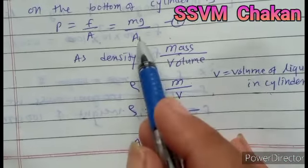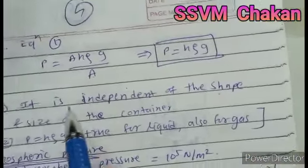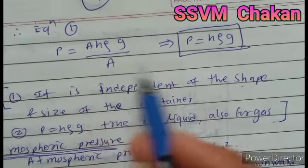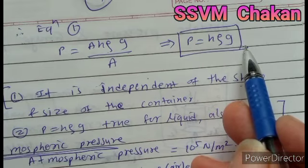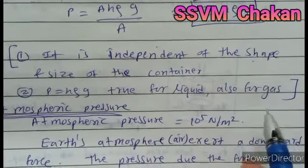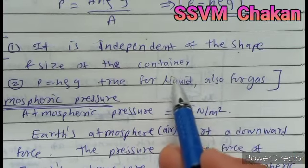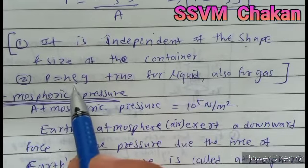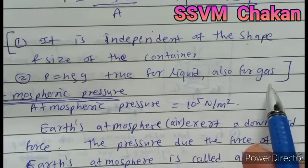Substituting the value of mass into the pressure equation, we get P = ρAhg/A, and area cancels, so P = ρgh. This formula is true for both liquid and gases.